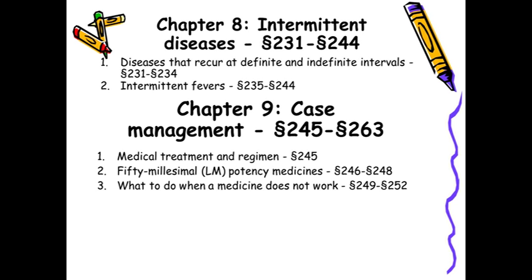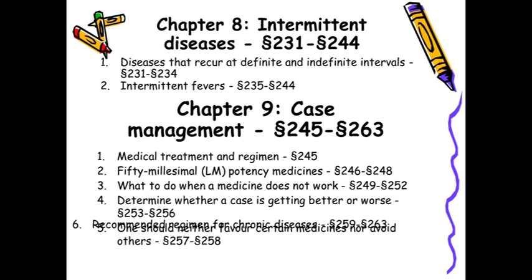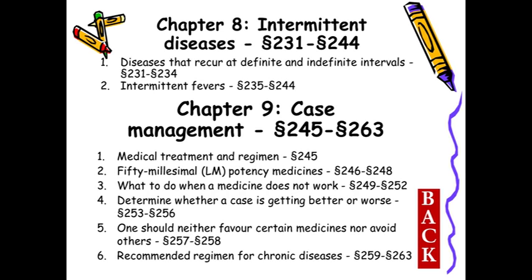LM or 50-millisimal potency medicines from aphorisms 246 to 248: how Hahnemann introduced in the sixth edition the 50-millisimal potencies, in which each potency slightly differed from the earlier potency — slightly modified and increased — so that the action was maintained, the duration of treatment was reduced, and aggravations were avoided. What to do when a medicine does not work, the obstacles and difficulties, how to overcome them, determining whether a case is getting better or worse, all types of aggravations — medicinal, disease, and homeopathic aggravation — and how to differentiate between them. Recommended regimen for chronic disease covered in aphorisms 259 to 263.